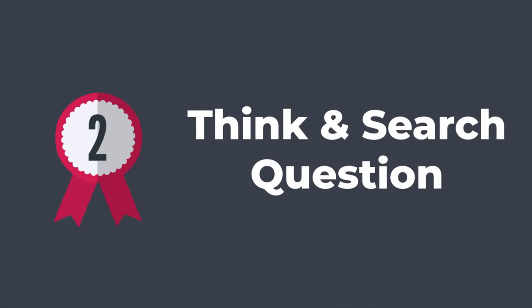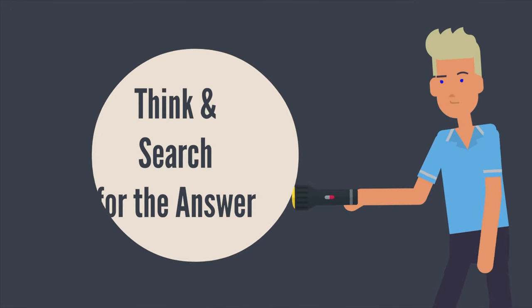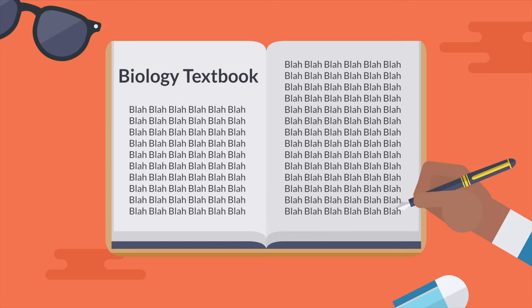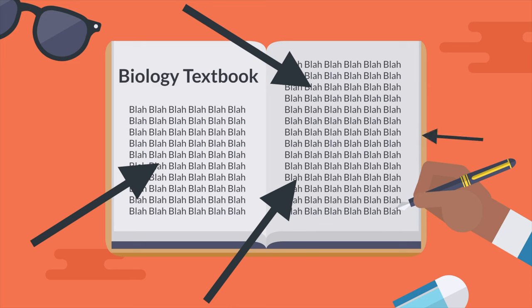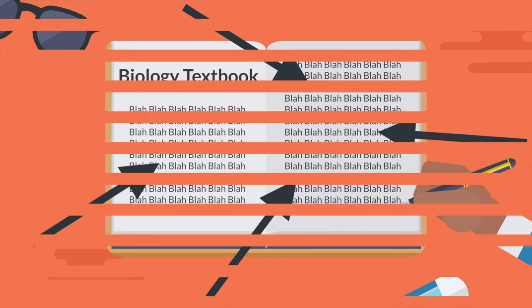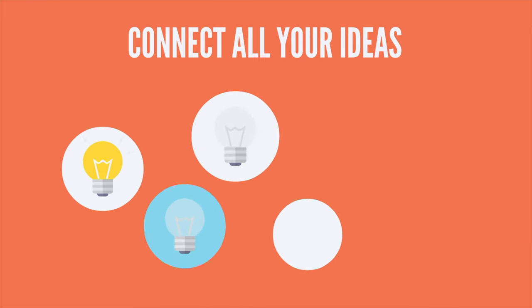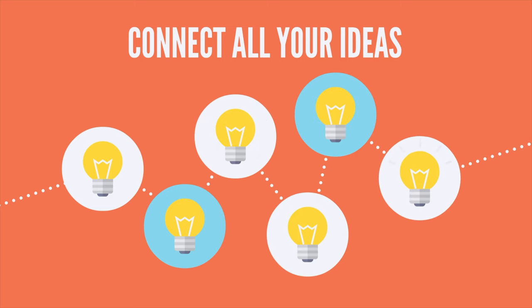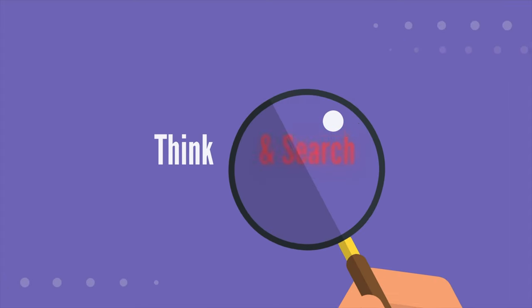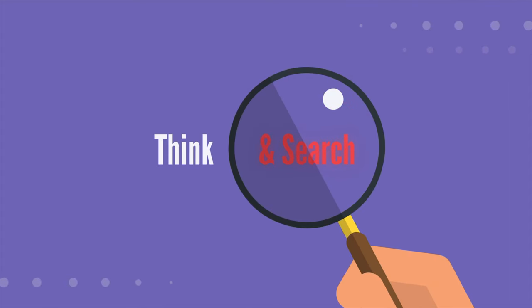A Level 2 question is called a Think and Search question. When you ask a Level 2 question, you have to think and then search for the answer in the book or article. The answer is not found just in one spot. You have to read and then connect little bits of information to come up with your answer. These questions are just a bit tougher to answer because they really make you think and then search for the answer.